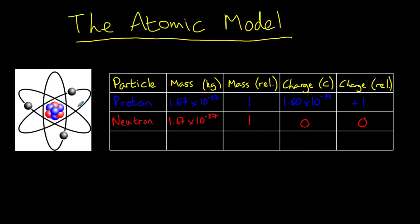Orbiting the nucleus are the electrons which are much smaller. Their mass is around 2,000 times smaller than that of a proton or neutron, around 9.1 times 10 to the power of minus 31 kilograms. It's so small that we say they have a relative atomic mass of 0.